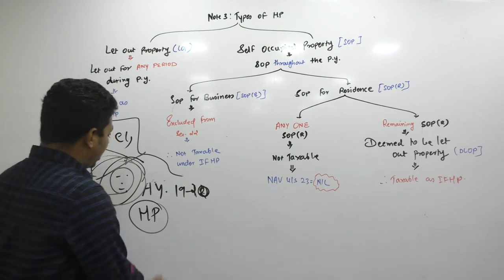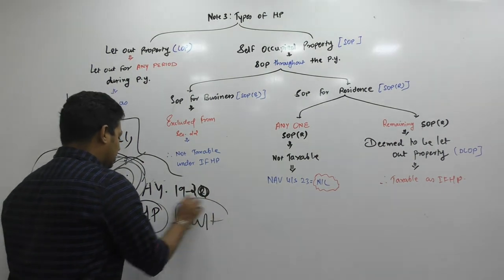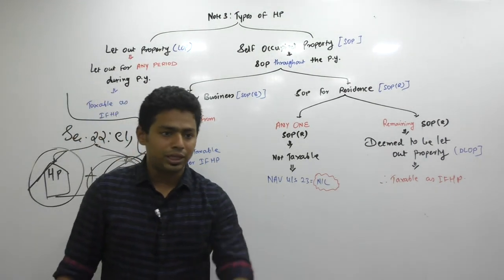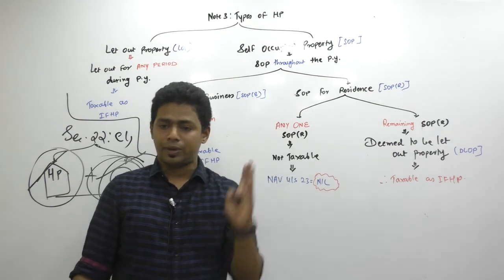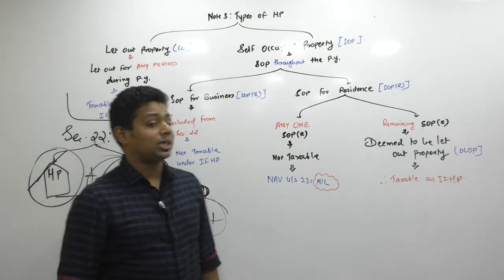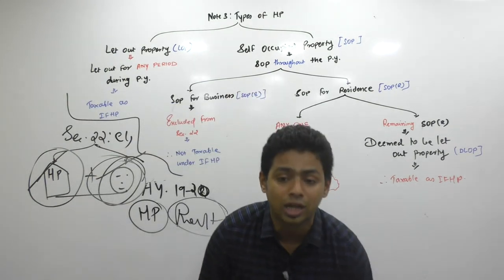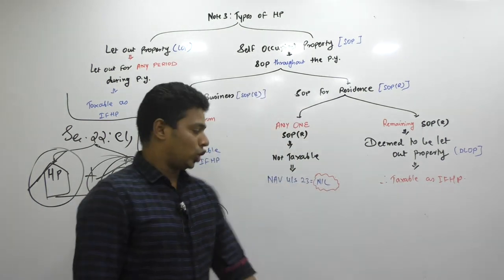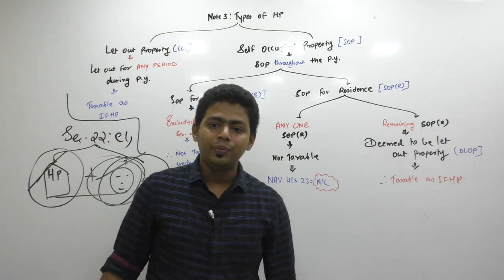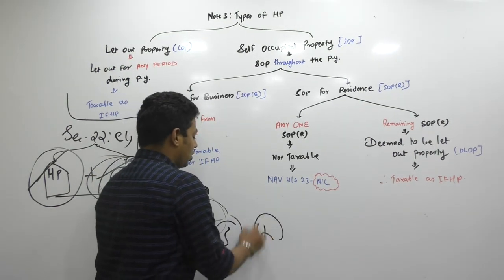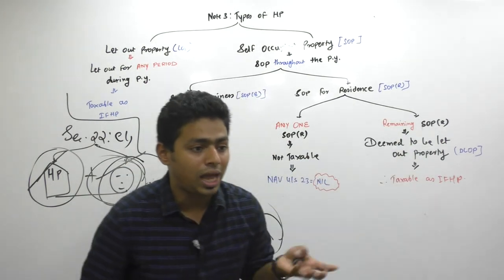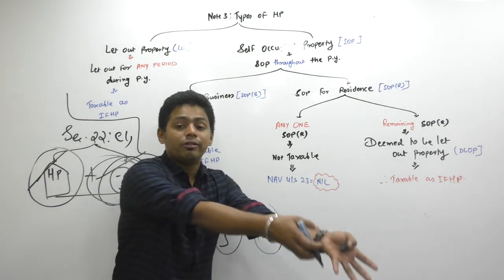Before we move ahead, one important thing discussed in the last lecture: here, rent is not taxable. In this chapter, rent alone is not taxable. What is taxable is the rent earning annual capacity. So your let-out period may be three months, but still we will take tax on 12 months because we want annual capacity. The taxable value in this chapter is net annual value — the word is annual.